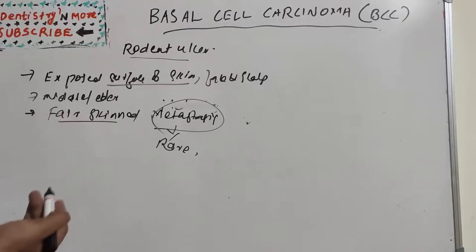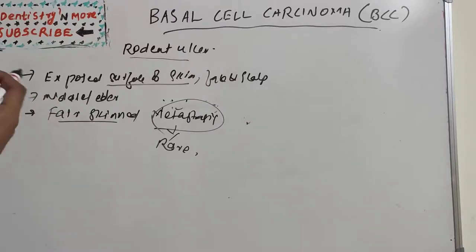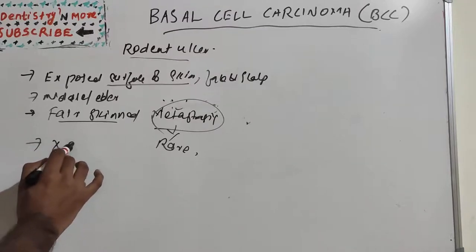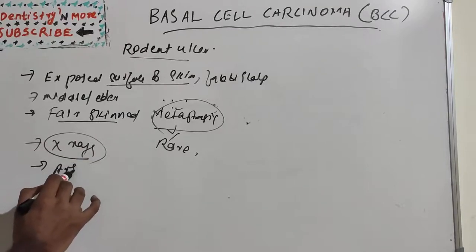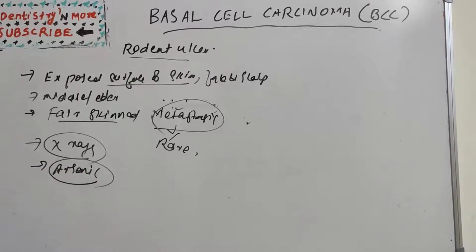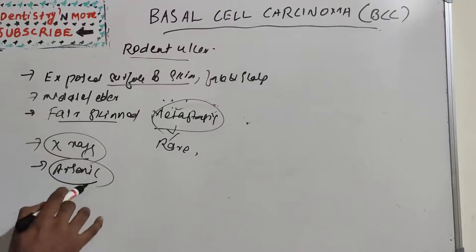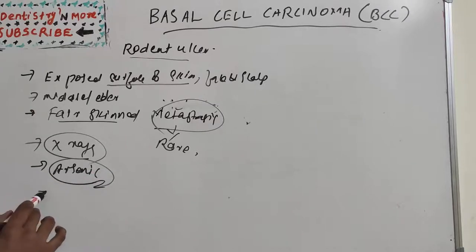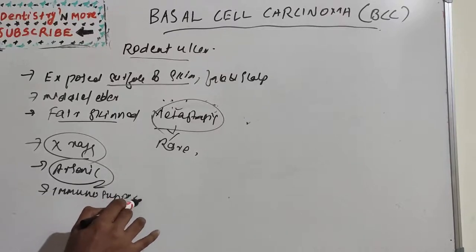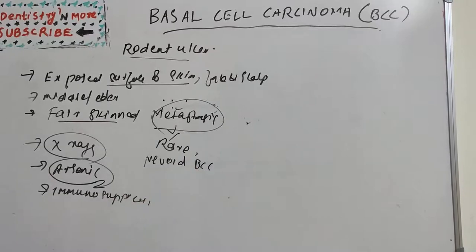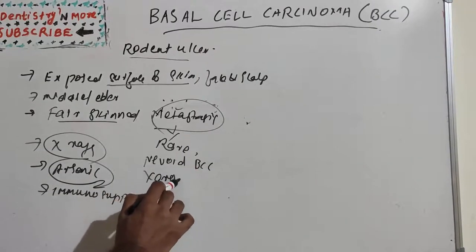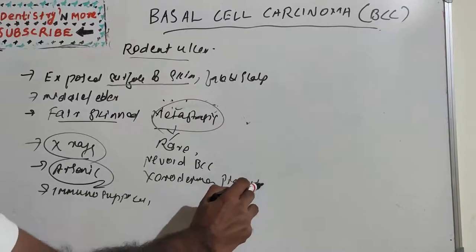The most common etiology is UV light exposure — that is, chronic sun ray exposure. Ionizing radiation such as X-rays is another cause, as are chemicals such as arsenic, particularly in people working in industrial areas. Immunocompromised people are also at risk, and syndromes like xeroderma pigmentosum and nevoid basal cell carcinoma syndrome are additional etiological factors.